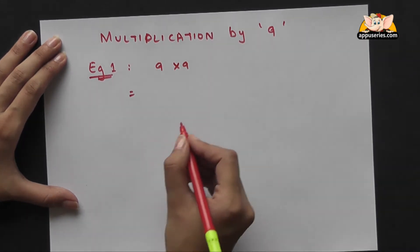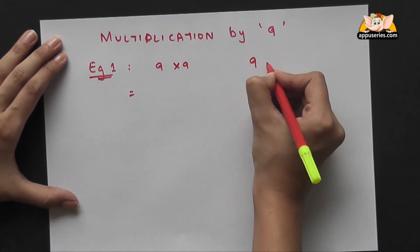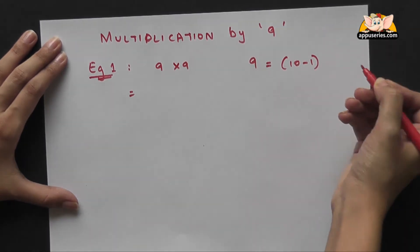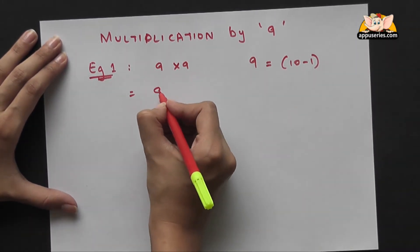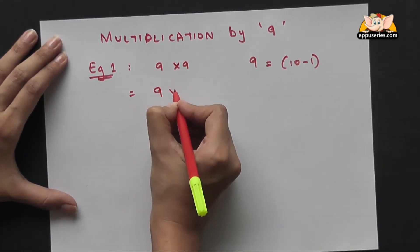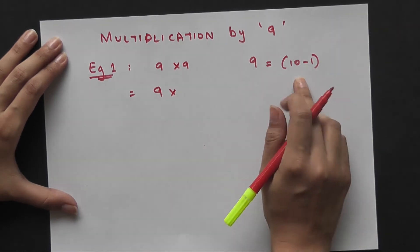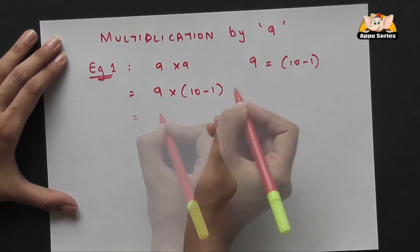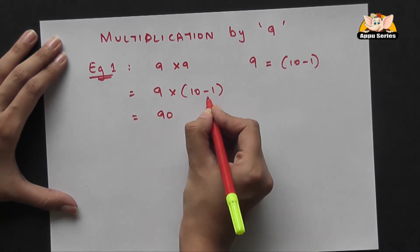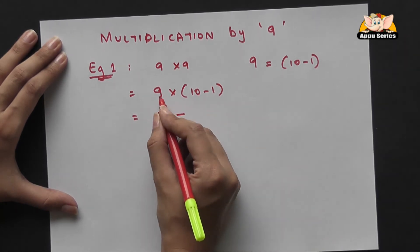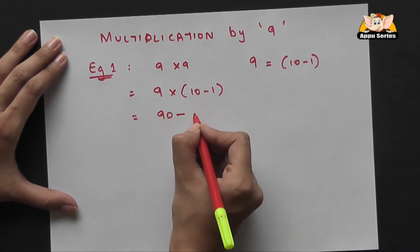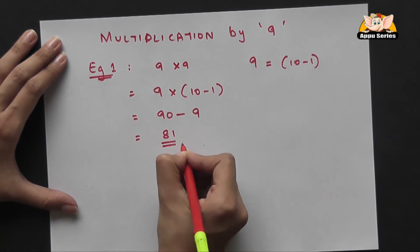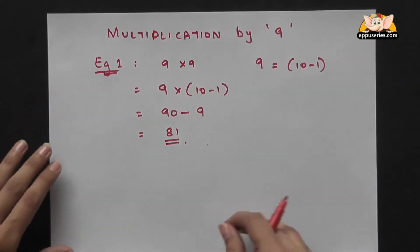For this tip you have to remember nine is nothing but ten minus one, isn't it? So you take down nine and replace this nine with ten minus one. Now we multiply nine into ten which gives us ninety, bring the operator down and multiply nine by one, which is nine, giving us eighty-one.